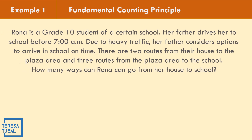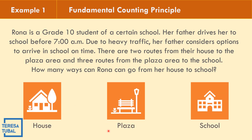Let us apply the Fundamental Counting Principle in problem number one. Rona is a grade 10 student of a certain school. Her father drives her to school before 7 a.m. Due to heavy traffic, her father considers options to arrive on time. There are two routes from their house to the plaza, and three routes from the plaza going to school. How many ways can Rona go from her house to school?